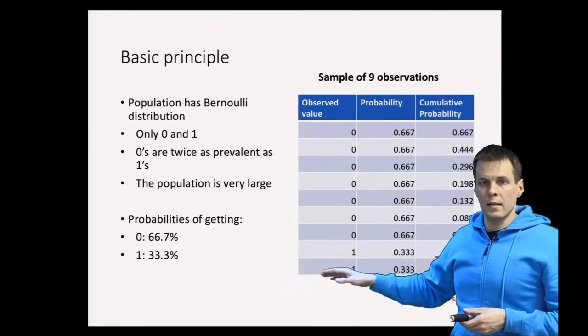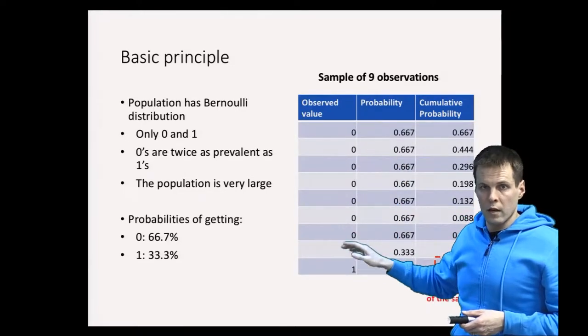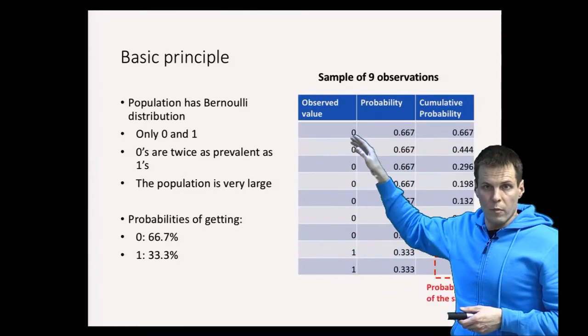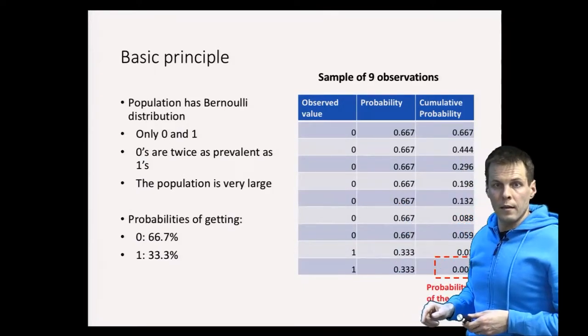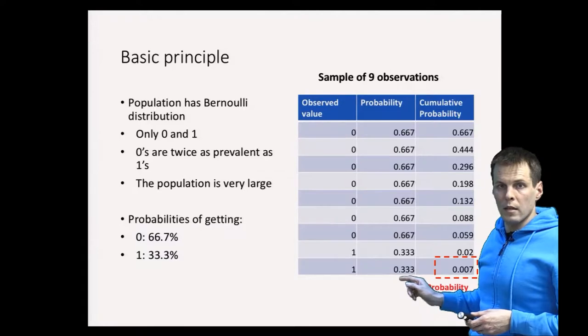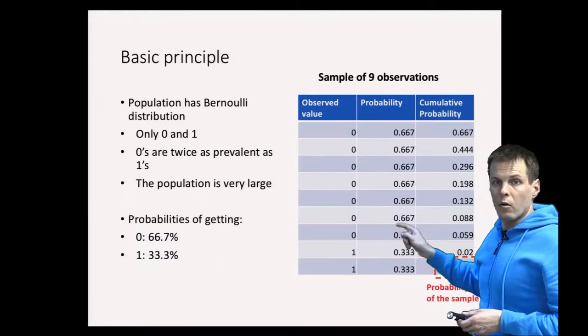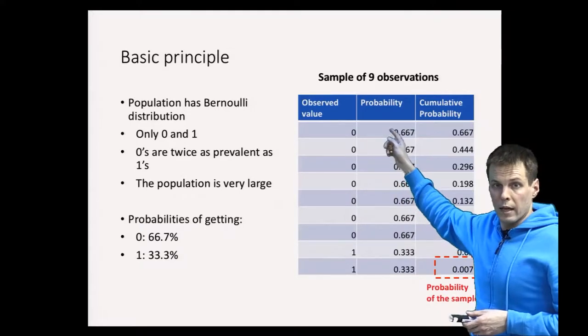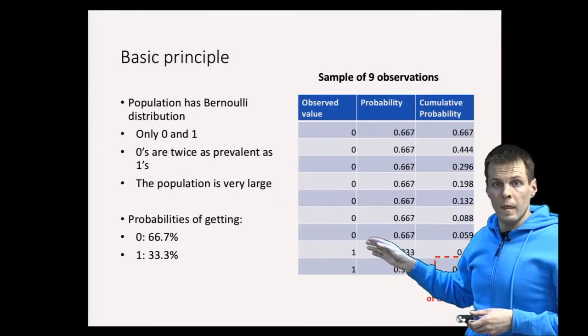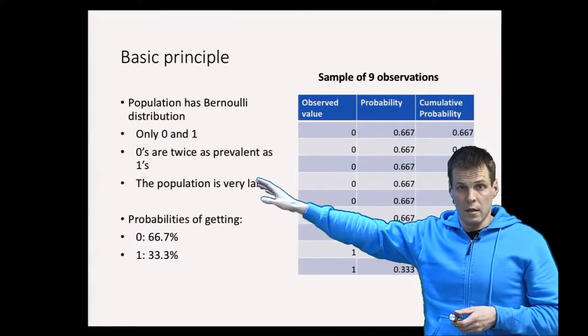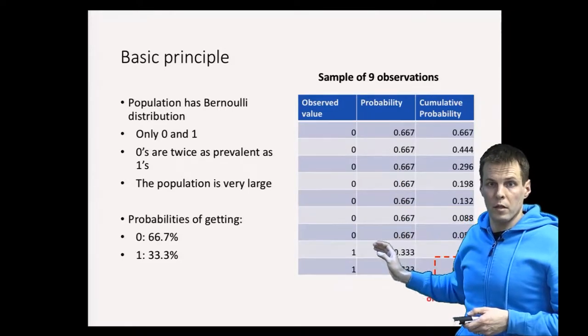The probability of getting zero is 67 percent from this sample, and the probability of getting one is 33 percent. When we have this set of observed values in our sample—seven zeros and two ones that happen to be in this order randomly without any significance—we calculate the probabilities, then calculate the total probability by multiplying all these individual probabilities together. When we know what the population is, we know the probabilities of getting particular values from that population.